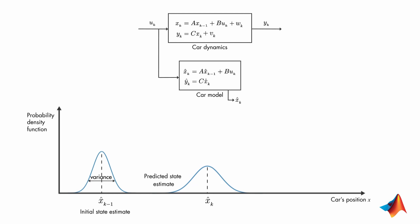As we discussed before, another source of information on the car's position comes from the measurement. Here, the variance represents the uncertainty in the noisy measurement. Again, the true position can be anywhere around the mean.